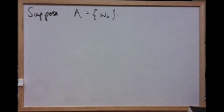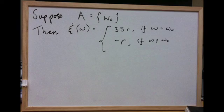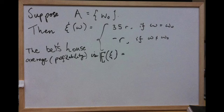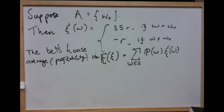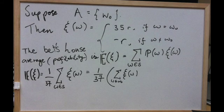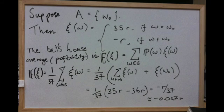Suppose A is the set containing a single element W-naught. Then G(W) equals 35R if W equals W-naught, and minus R if W does not equal W-naught. The bet's house average is the expected value of G, determined by the expected value formula. Since the probability of W for all elements of S is 1 over 37, we can take it outside the summation sign and split the summation into two parts, which works out to minus R over 37, approximately minus 0.027R.